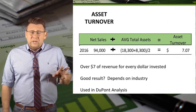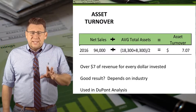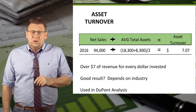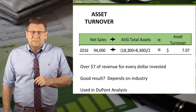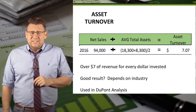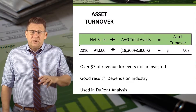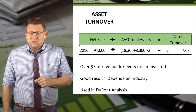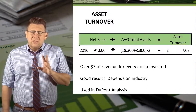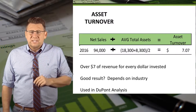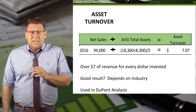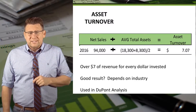So for 2016, net sales divided by average total assets gives us an asset turnover of 7.07. This means that for every $1 invested in assets, the company is generating over $7 of sales revenue. Sometimes this is expressed as times, meaning 7 times the amount of revenue as assets.